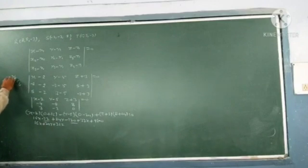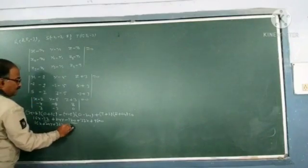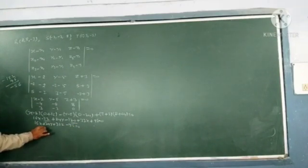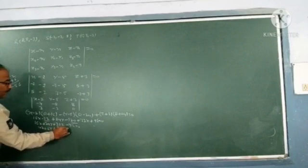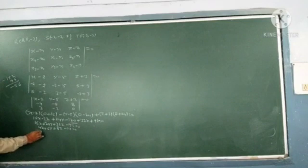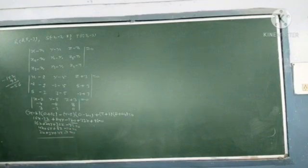So minus 56. Now each term is divided by 4: 4 into 16, 4 into 24, 4 into 32, or again by 2: 2x plus 3y plus 4z minus 7 equal to 0.